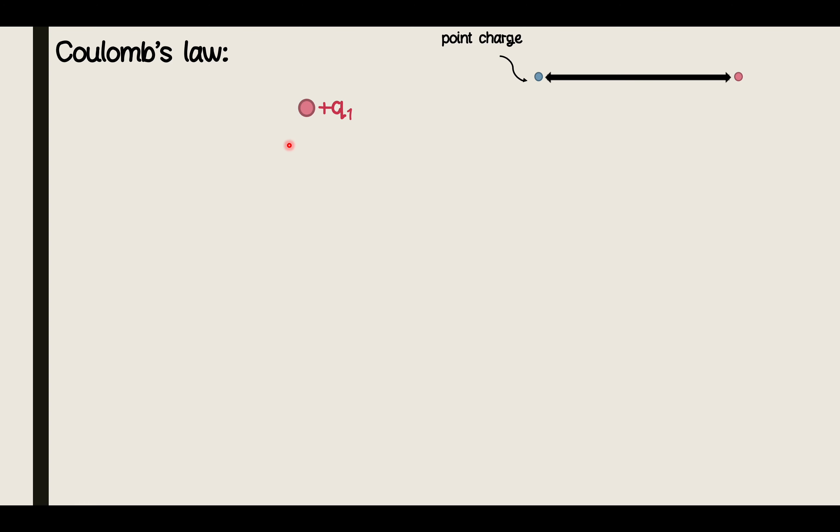Again assume there are two point charges Q1 and Q2 separated by some distance R. Here we have assumed that charges are unlike in nature, that is Q1 is positively charged and Q2 is negatively charged. Important point to note here is that the nature of charges hardly matters in the formula.